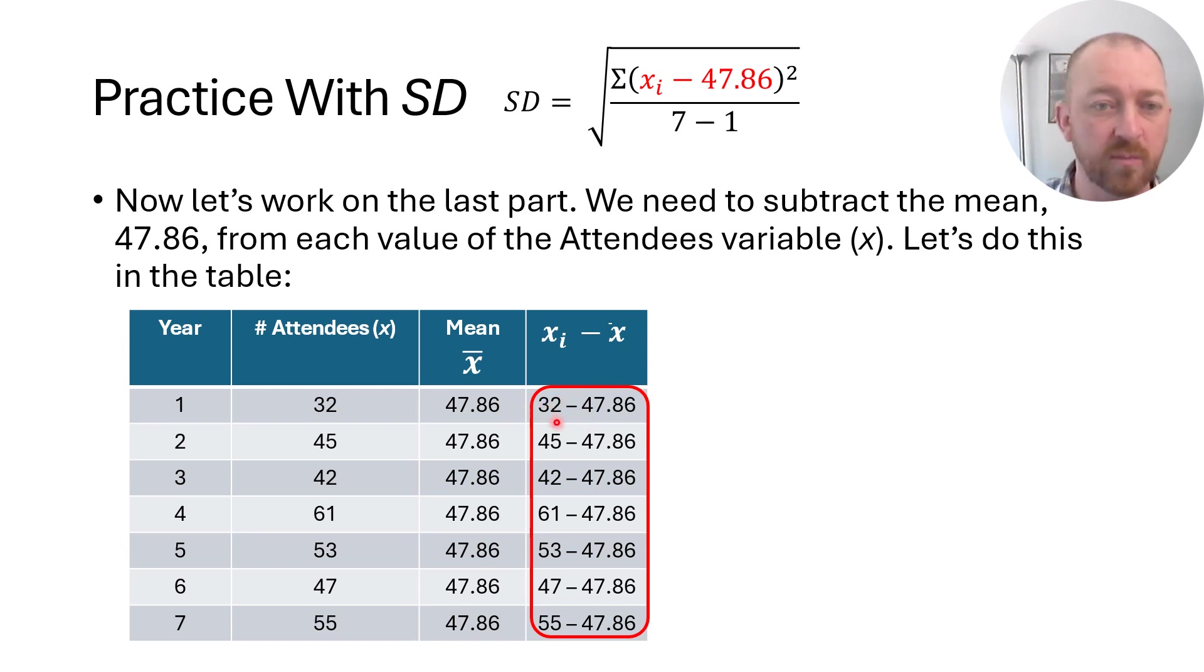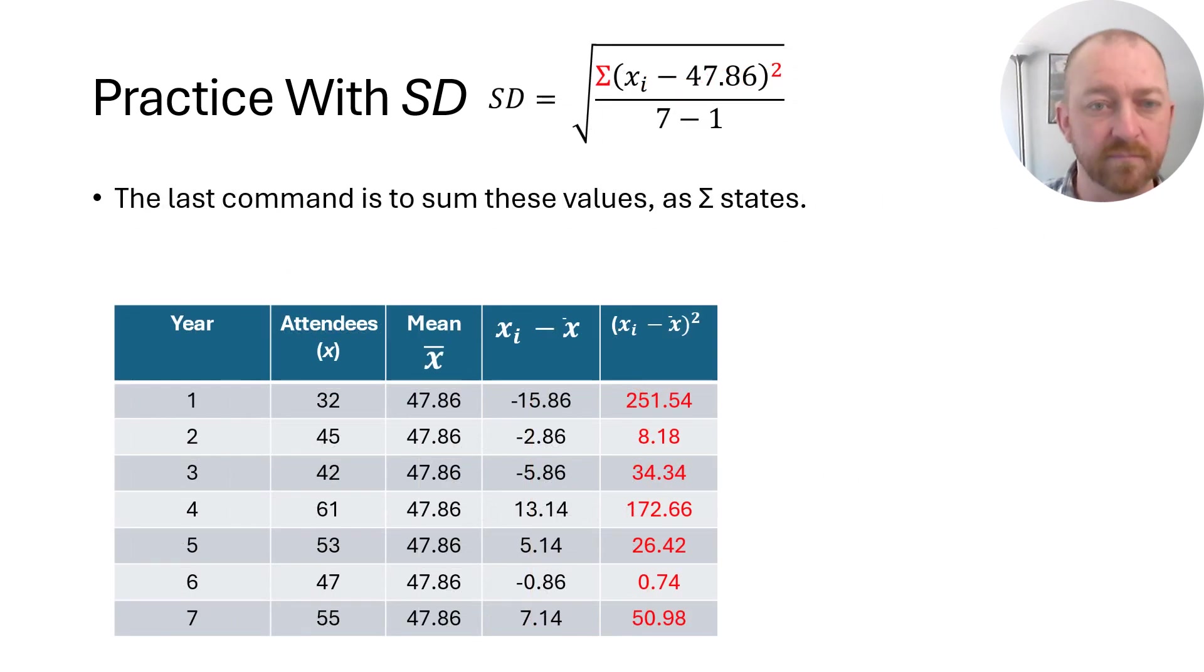And so now we need to subtract 47.86 from every value of x that we have. That's what it asks us to do right here. So we can do that in a new column. We can say 32 minus 47.86. Then we'll do 45 minus 47.86 and 42 minus 47.86 and so on. We need to do that for all of those. So we'll calculate those out. As you can see here, we've calculated that out. This is the difference or the deviation scores. By the way, this is the mean here.